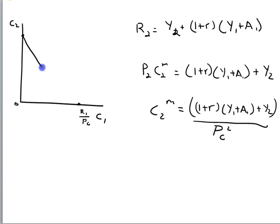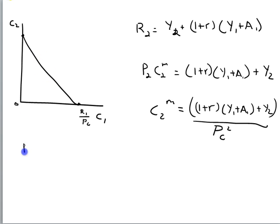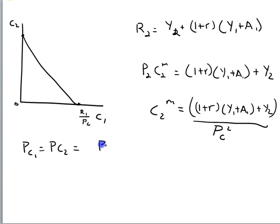That gives the maximum amount that can be consumed in year two. Connecting those two points on the horizontal and vertical axes gives the budget line — the maximum amount that can be consumed. To figure out the slope of this line, we make the assumption that P1C1, the price of consumption in year one, equals the price of consumption in year two — I'll just call that the price of consumption. So prices are not changing through time.